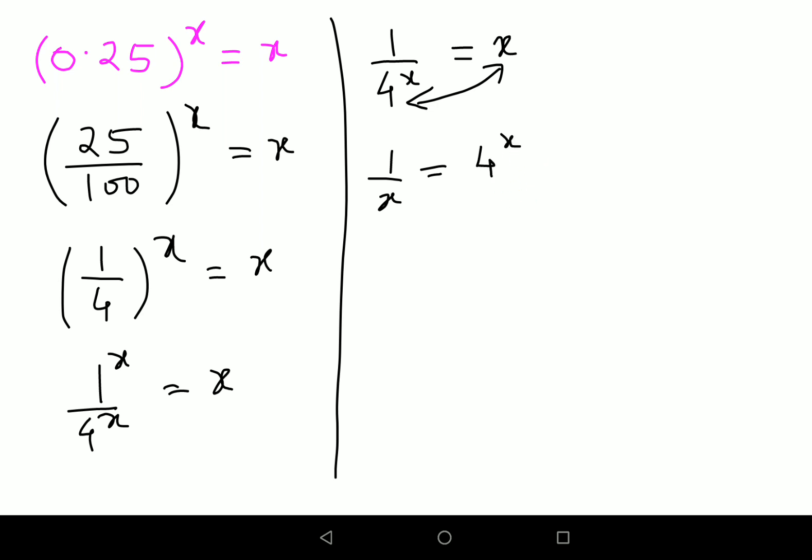Now I want all the variables on one side, so I'll take x root on both sides of the equal to. So when I take the x through, the x and this x also cancels and this will be 1 upon x the whole raised to 1 upon x equals to 4.